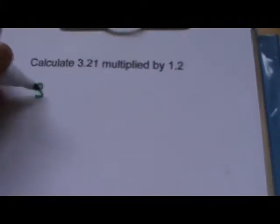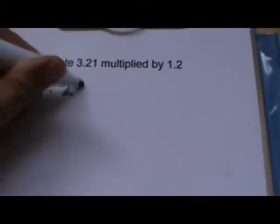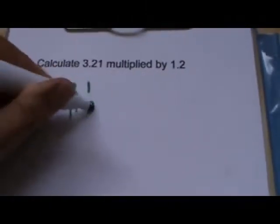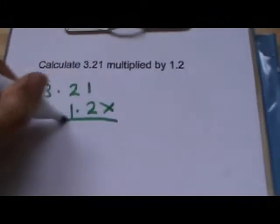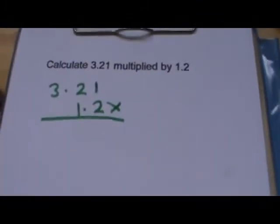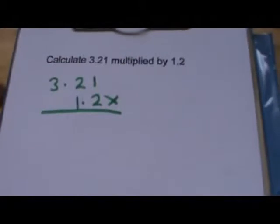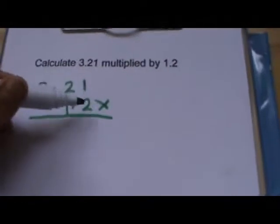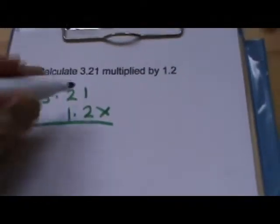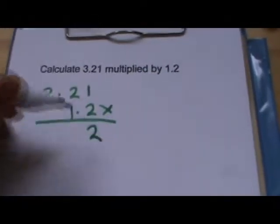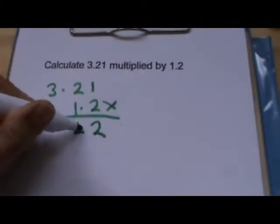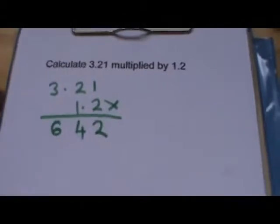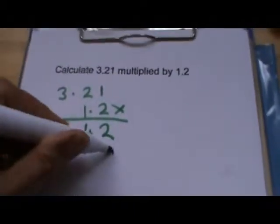So we've got 3.21 and we're multiplying it by 1.2. Just ignore the decimal points. So think of the sum as 321 times 12. So start multiplying on the right-hand side. 2 times 1 is 2. 2 times 2 is 4. 2 times 3 is 6. We're moving on to the next column, so put a 0 first.